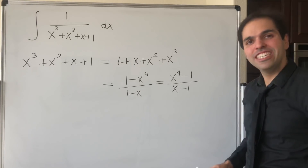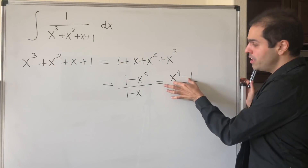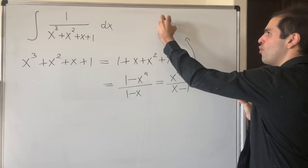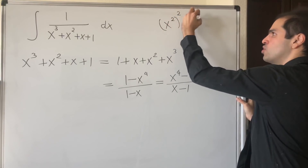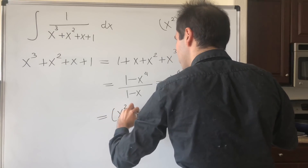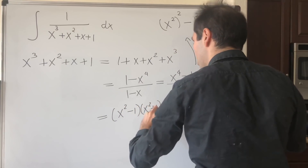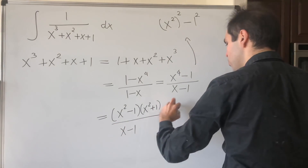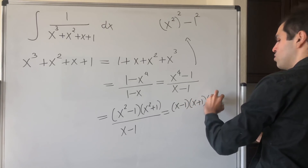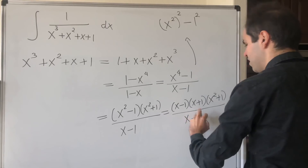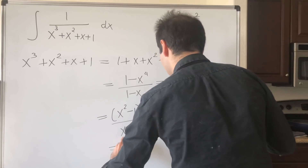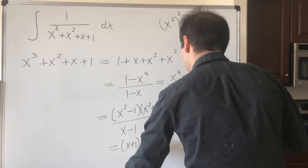So it's a little bit of cheating, but not that much. Notice the numerator can be factored out quite nicely, because x to the fourth minus 1 is just x squared squared minus 1 squared. So this factors as x squared minus 1 times x squared plus 1 over x minus 1, which is x minus 1 times x plus 1 times x squared plus 1 over x minus 1. So the bad terms cancel out, and you're left with x plus 1 times x squared plus 1.